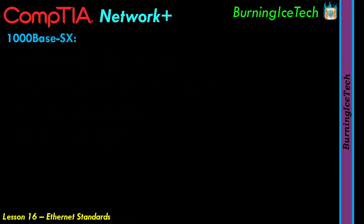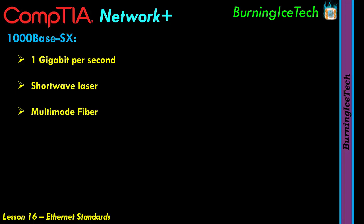Here we have another Ethernet standard — the 1000BaseSX. By looking at its name you can probably guess its speed: one gigabit per second. This is a fiber standard and it has a shortwave laser. Because it uses a shortwave laser, you can normally expect a distance of approximately 220 to about 550 meters, though it's not set in stone and depends on other variables, including the fiber cable itself.